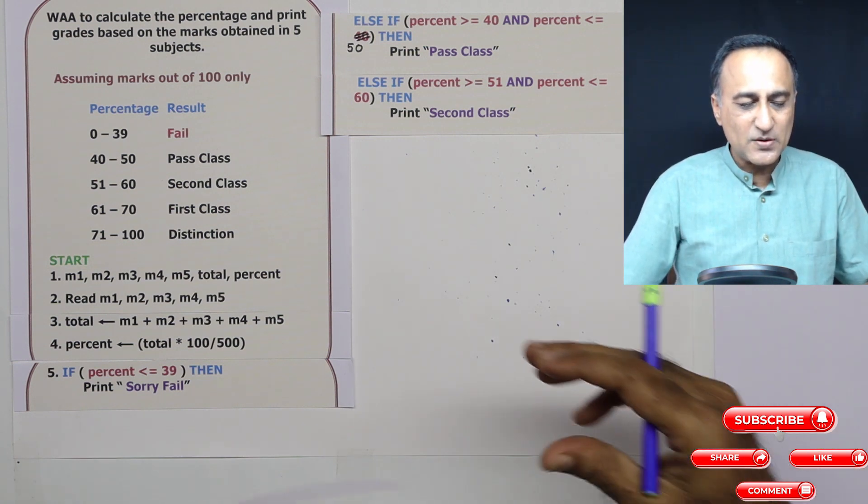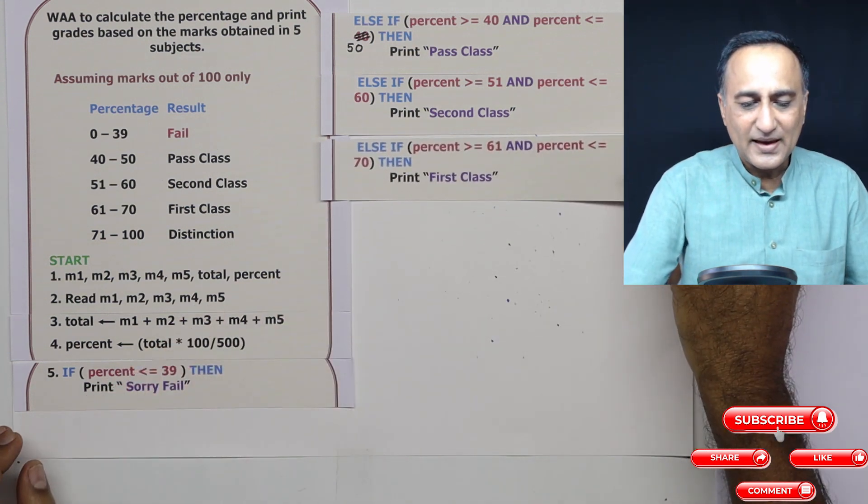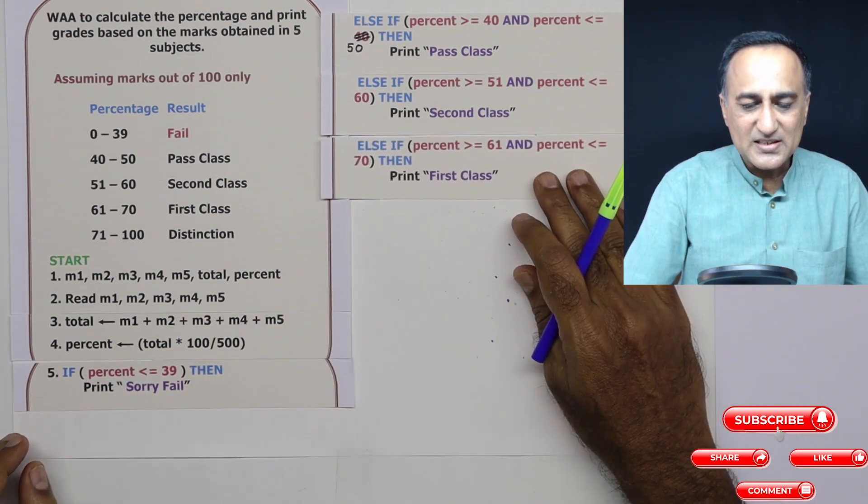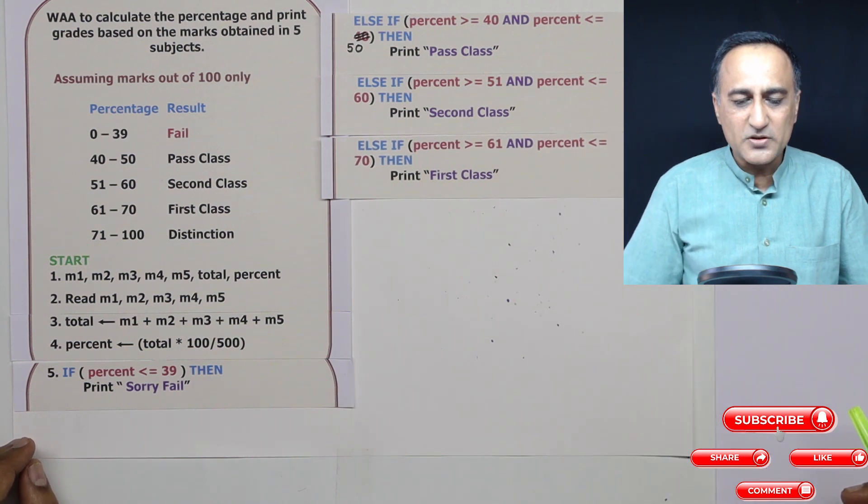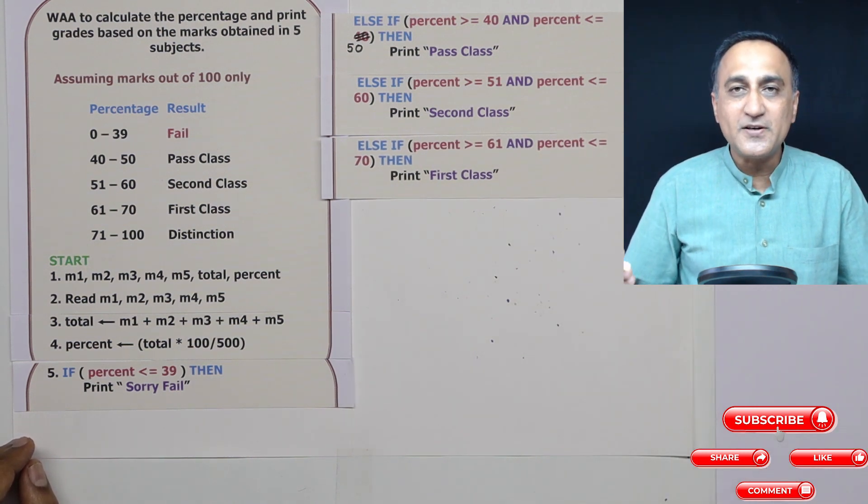Now we come to 61 to 70. Else if percent is greater than or equal to 61 and less than or equal to 70, then we are going to print first class.